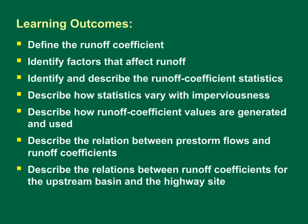In this training module, we learned that the runoff coefficient is the ratio of runoff to rainfall for each storm event, and that local hydrology and surface features affect runoff coefficients. The average, standard deviation, and skew of runoff coefficients characterize the population, and the fraction of total impervious area has a substantial effect on the average and skew. The frequency factor method is used to generate these statistics in Monte Carlo analyses. Data indicate that pre-storm flows are correlated to runoff coefficients, with a range of 0.6 to 0.9 seeming reasonable. In SELDOM, the runoff coefficients for the highway site are correlated to those for the upstream basin because the two areas are presumed to be adjacent, with the absolute maximum correlation occurring when both areas are completely impervious and the minimum when one is completely impervious and the other completely pervious.